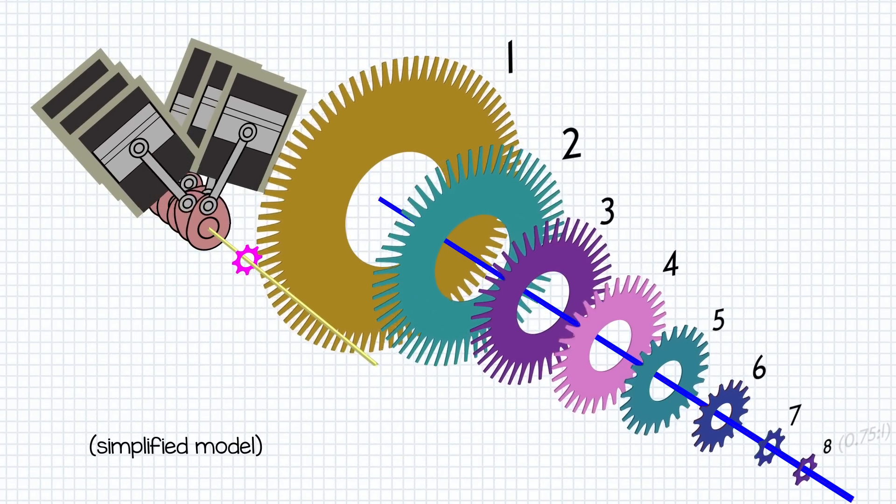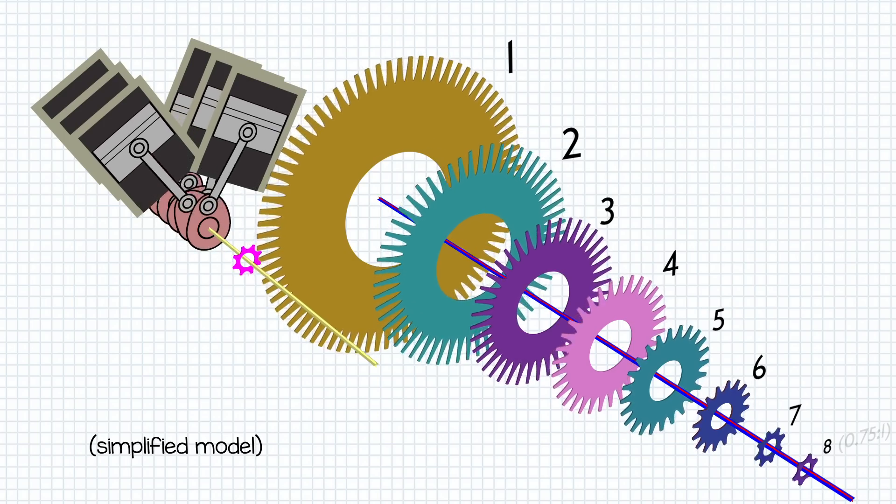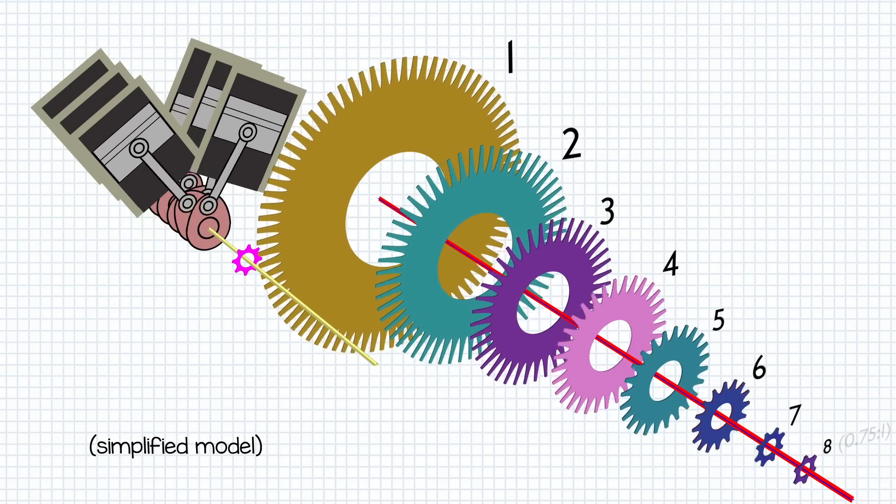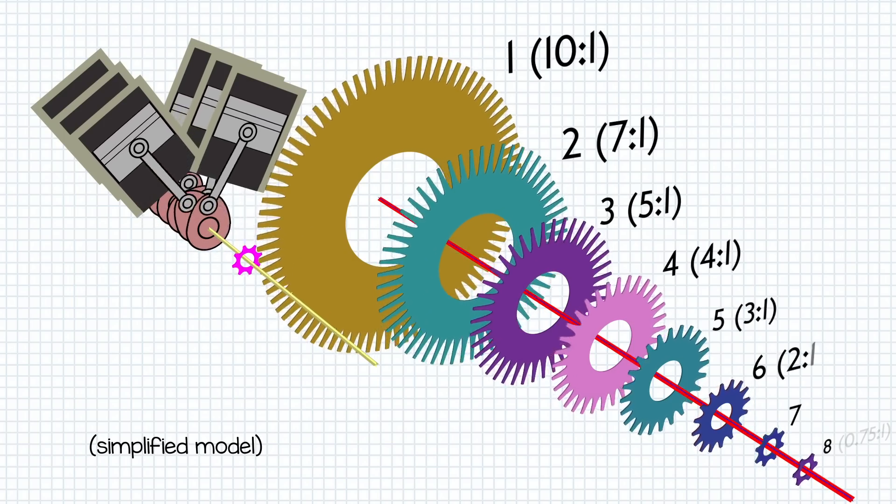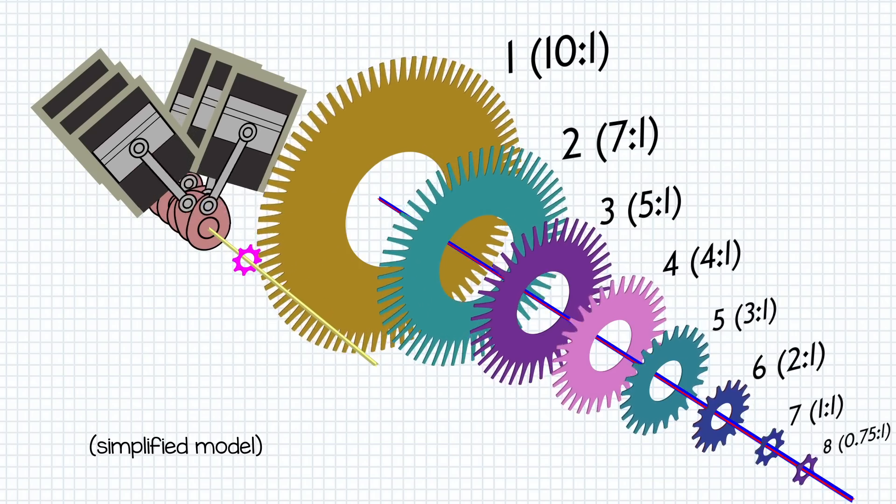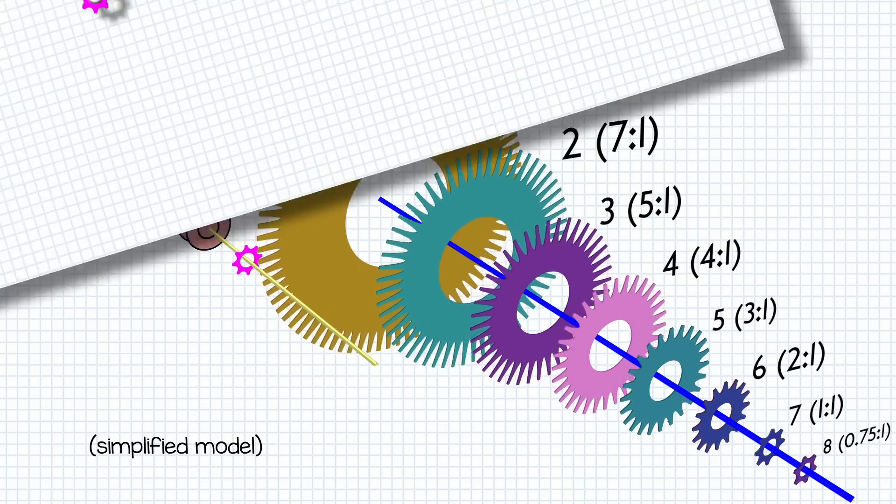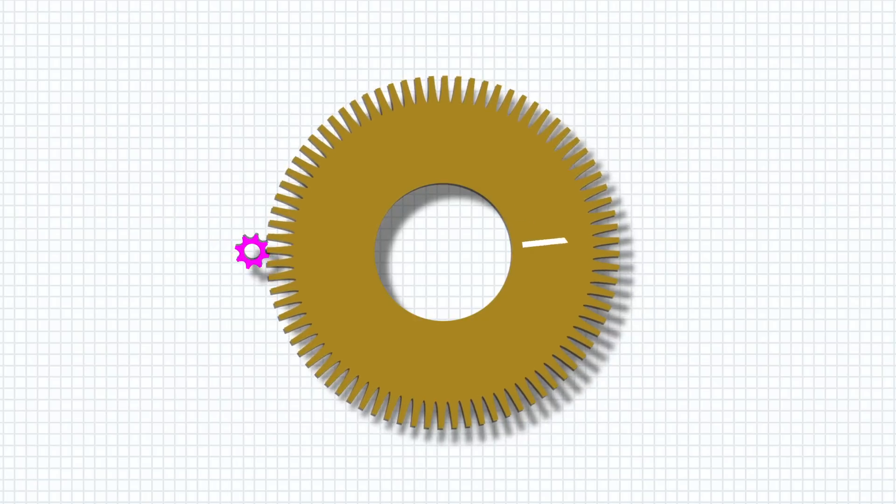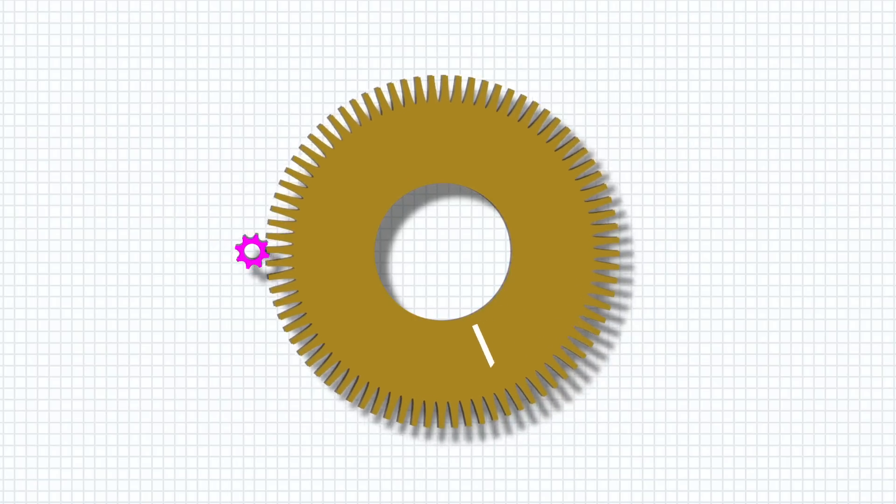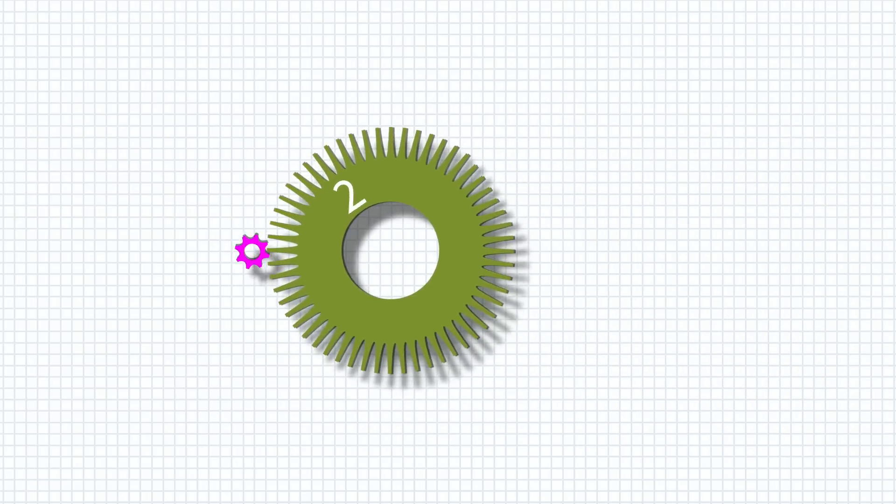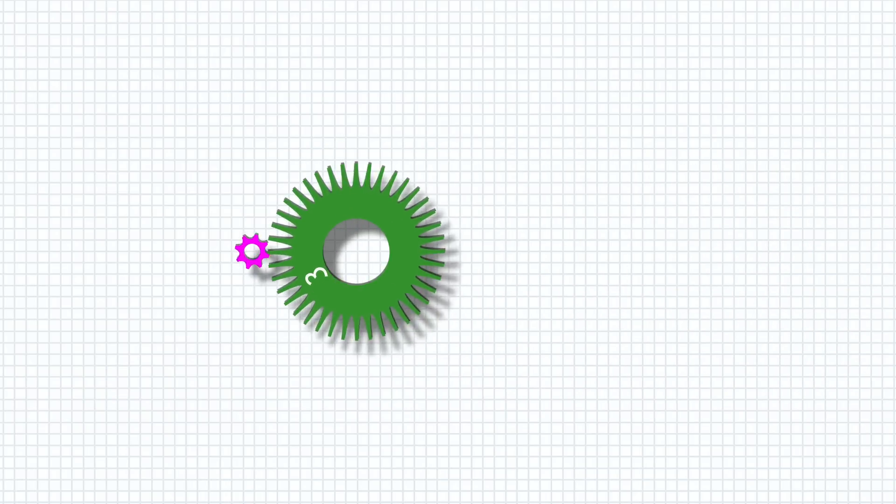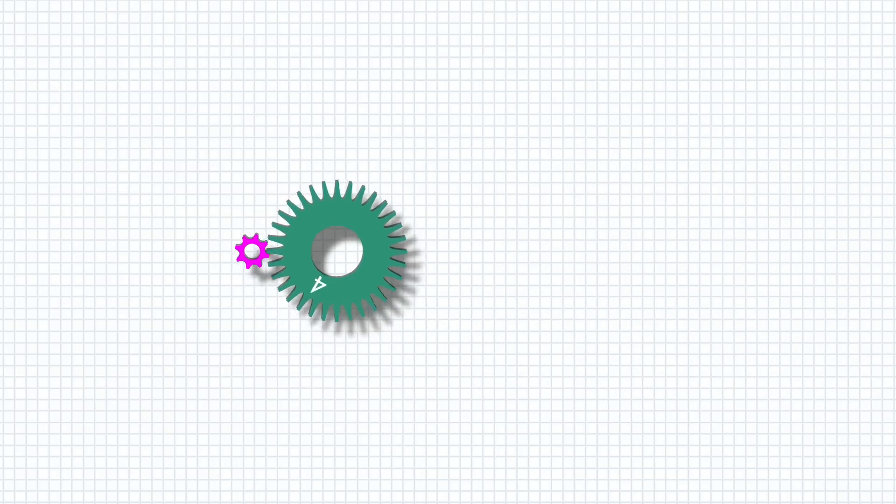The transmission has gears of different sizes that will connect to the crankshaft depending on which gear the driver selects. The different gears are described by their ratios which just describes how big the gear is compared to the gear it connects with the crankshaft. The first gear has the biggest ratio so it might be ten times the size of the crankshaft gear. These ratios get smaller and smaller until 8th gear which might have a ratio of 0.75 to 1 with the crankshaft gear.